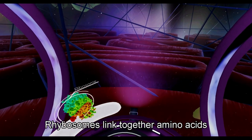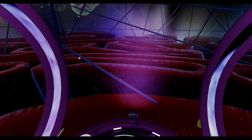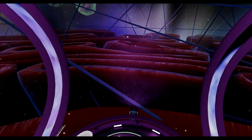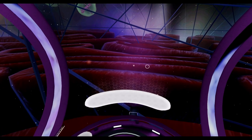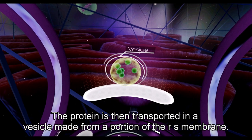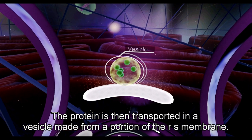Ribosomes link together amino acids, following the instructions received from the RNA. The protein is then transported in a vesicle made from a portion of the RER's membrane.